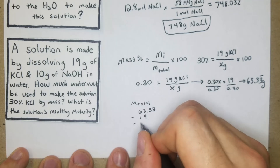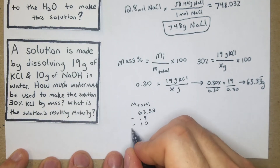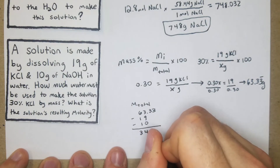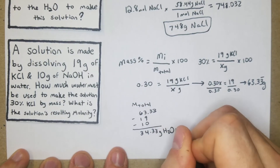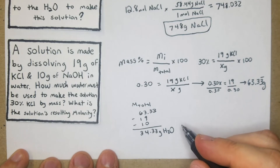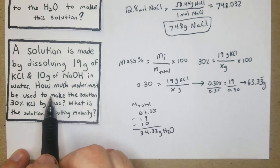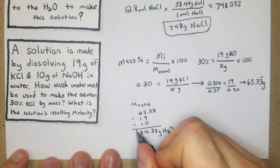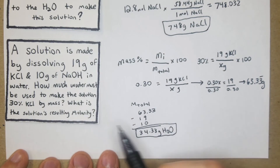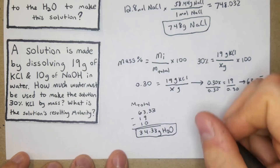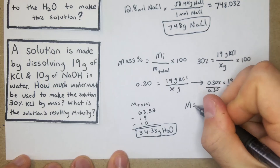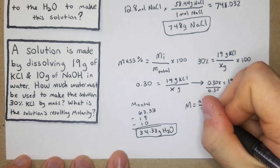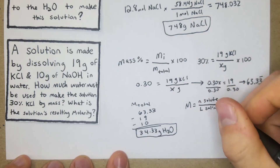Now subtract the known masses: total mass 63.33 minus 19 grams of KCl minus 10 grams of NaOH equals 34.33 grams of H₂O. That answers the first question — 34.33 grams of water must be used. For the second part, we need to find the solution's molarity: molarity equals moles of solute per liters of solution.